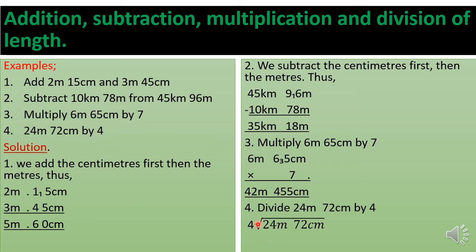For division: 24 meters and 72 centimeters divided by four. Four divided into 24 gives us 6 meters, and four divided into 72 gives us 18 centimeters. So the answer is 6 meters 18 centimeters.